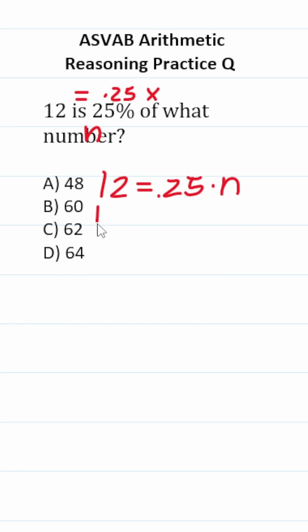Let's clean this up a little bit. This becomes 12 equals 0.25n. By solving for n we'll have our answer. That said, let's make this a little bit easier.